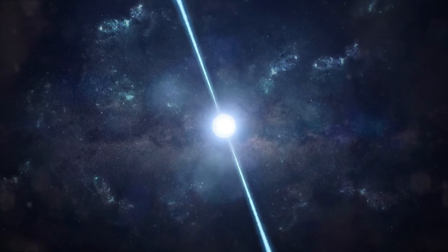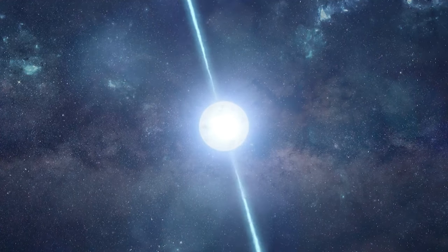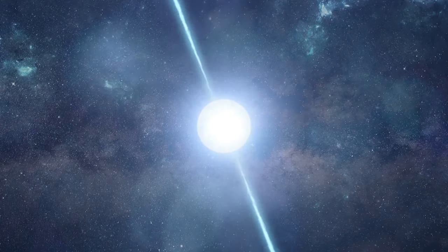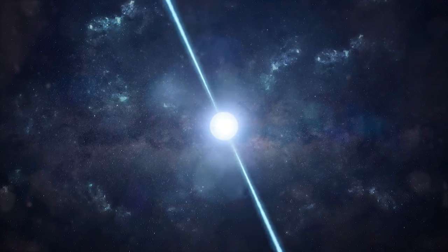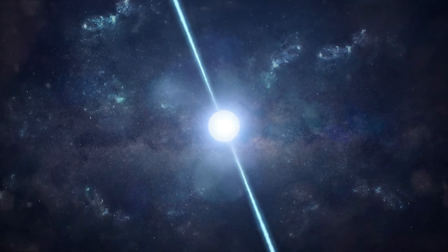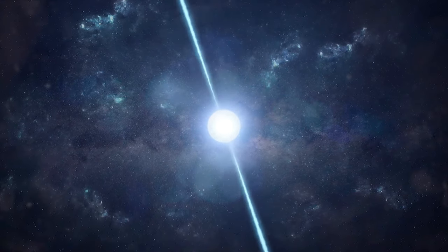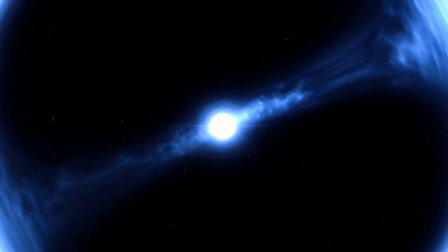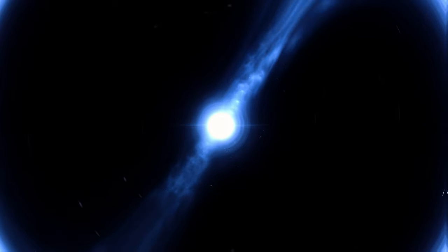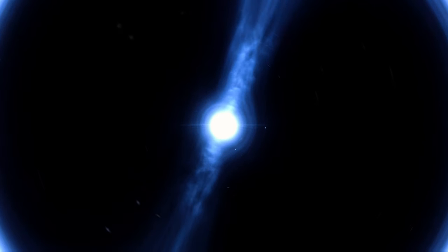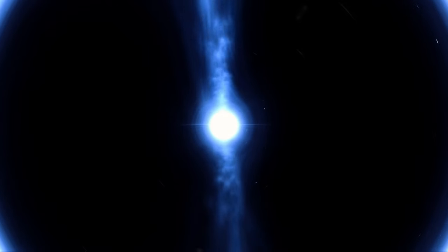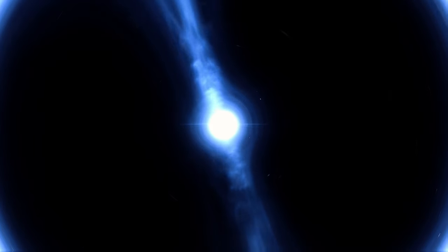Neutron stars are truly bizarre objects that are common across our universe. Ordinary stars, once their fuel is depleted, can collapse under their own gravity, leading to the formation of a neutron star. These incredibly dense objects pack the mass of our sun into a sphere just a few kilometers wide, held together by the immense pressure that crushes protons and electrons into neutrons.